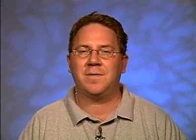When you create a form object and pass parameters to a report, the basic ideas are the same as in the last chapter when launching a form using a parameter list. You create the parameter list, add parameters to the list, then call the report with the parameter list. You can use this both with run_product and run_report_object.